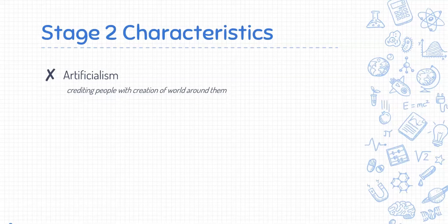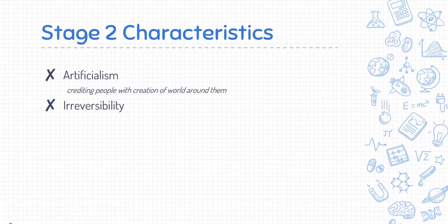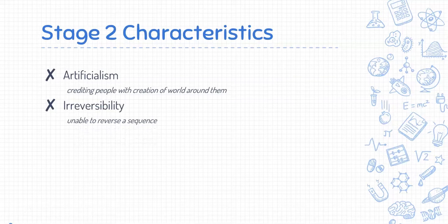Children in Stage 2 are unable to reverse a sequence, a characteristic known as irreversibility. This is one of the key characteristics that distinguish children in this stage from Stage 3, where they begin to develop the ability to recount events in a different order from which they occurred. Children in Stage 2 will find it difficult to recount a specific event in reverse order from end to starting point.